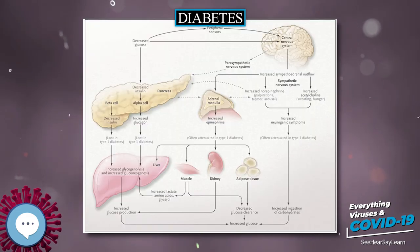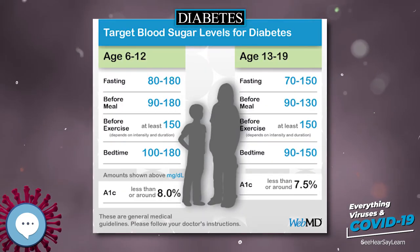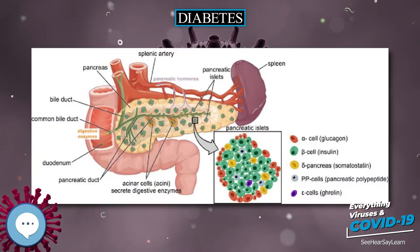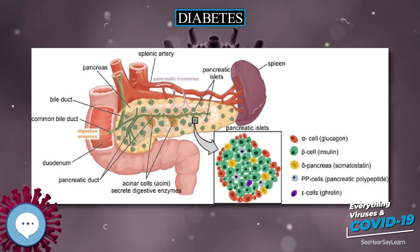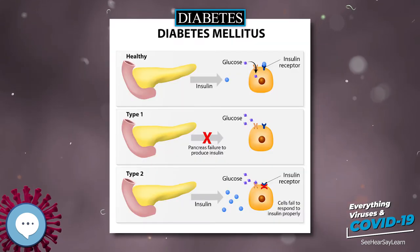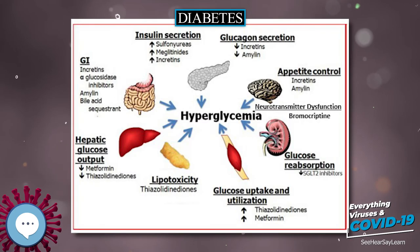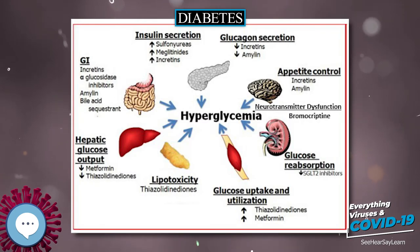Insulin is the principal hormone that regulates the uptake of glucose from the blood into most cells of the body, especially liver, adipose tissue and muscle (except smooth muscle), in which insulin acts via the IGF-1. Therefore, deficiency of insulin or the insensitivity of its receptors play a central role in all forms of diabetes mellitus.